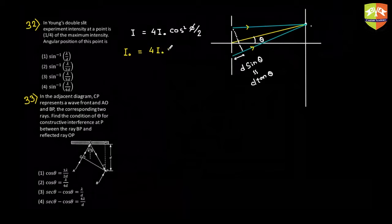So you will get cos of phi by two to be equal to plus minus one by two. Now plus minus one by two actually represent one point above and the other similar point below, so we'll just focus on the point above, so I'll just take the positive value over there.